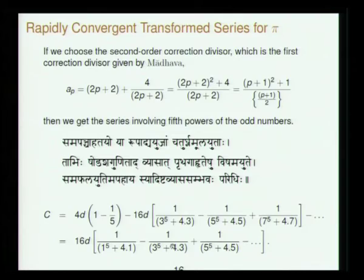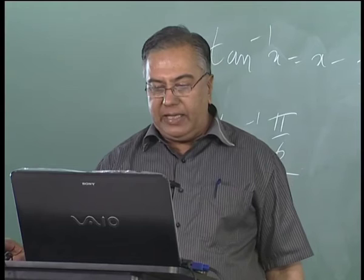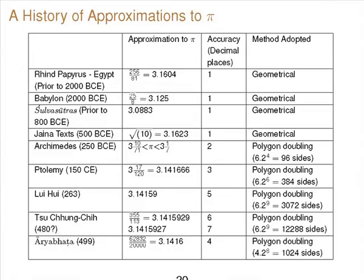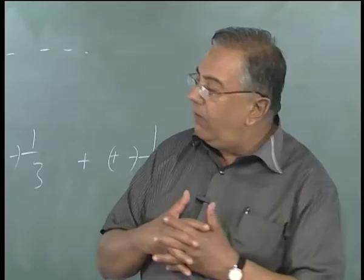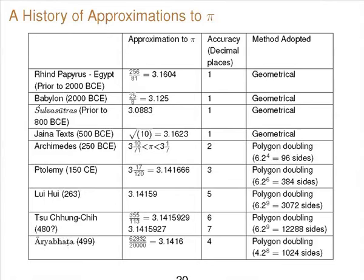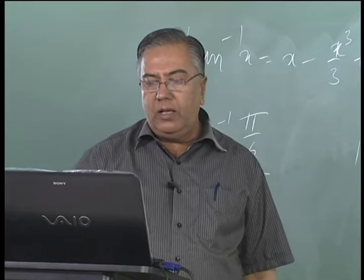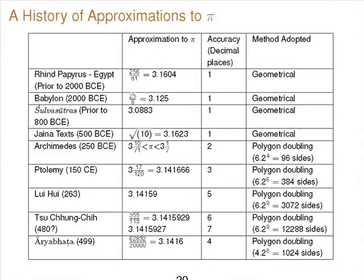Let us review where all this work stands in the history of mathematics with a quick look at the history of pi. The Rind Papyrus and Babylon had values of order 3.16; Shulva Sutras had 3.08, with a slightly better value in Manava Shulva Sutra. Jaina texts adopted square root of 10. Archimedes gave his famous inequality. Ptolemy had the recurring decimal 3.146666 working in hexagesimal place value. The Chinese discovered 355/113, the next good rational approximation after 22/7, accurate to 6 decimal places.